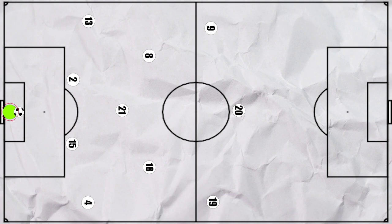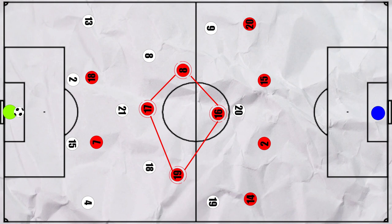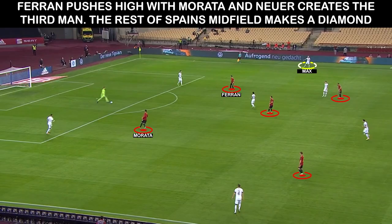Let's quickly touch on what Germany wanted to do on the ball before moving on to Spain. When possible, Germany would look to begin the play shorter, with Neuer's on-the-ball ability being a big factor in this. Spain's 4-1-4-1 would adapt, as Ferran Torres would push up alongside Morata to create a front two, whilst the rest of the midfield shifted to a lopsided diamond, with Dani Olmo staying slightly wider on the left.